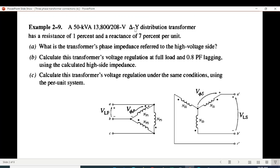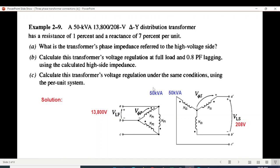First, delta-Y distribution transformer, we can draw this: primary side delta, secondary Y connection. We can input the data. Power: 50 kVA on both sides. Primary power 50 kVA, secondary power also 50 kVA. Input voltage is line-to-line voltage, so 13,800 volt line-to-line voltage between line A and B, between B and C. Secondary line-to-line voltage: 208 volt, secondary voltage 208 volt.